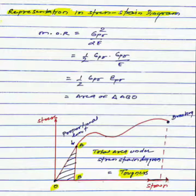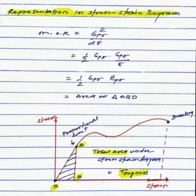So the area under the stress-strain diagram up to proportional limit stress represents resilience, whereas the total area under the stress-strain diagram, that is up to breaking point, represents toughness.